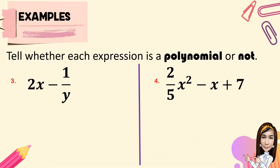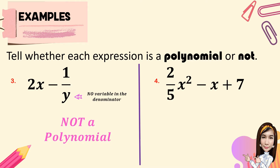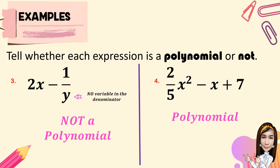Third, 2x minus 1 over y. Since one of our restrictions is there must be no variable in the denominator, therefore this expression is not a polynomial. Fourth, 2 over 5x squared minus x plus 7. The denominator is not a variable, therefore this expression is a polynomial.